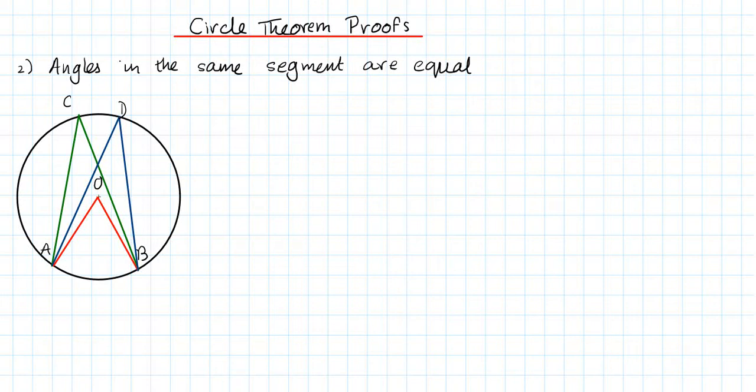We've got a circle with center O. AO is a radius, BO is a radius. AD is a chord and so is DB, and they form an angle over here on the circumference of the circle from the arc AB. The same arc AB forms another angle using the chords AC and BC over here.